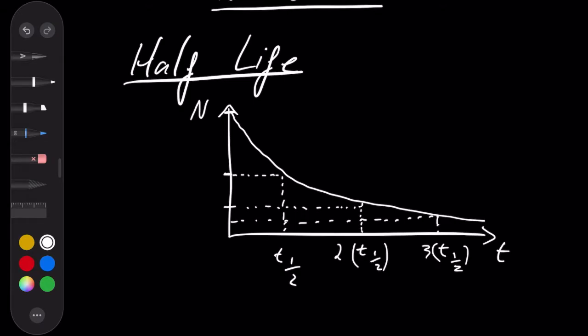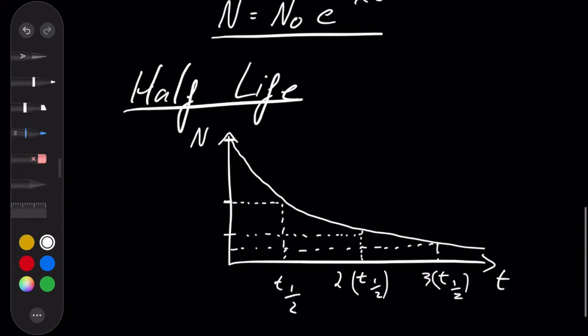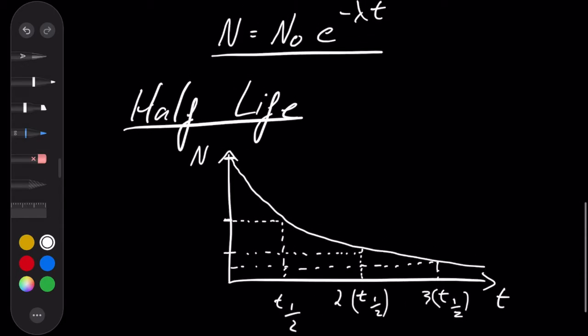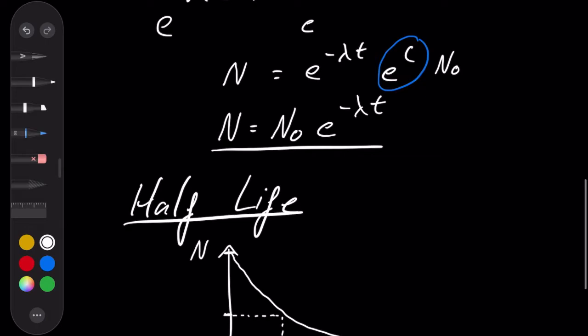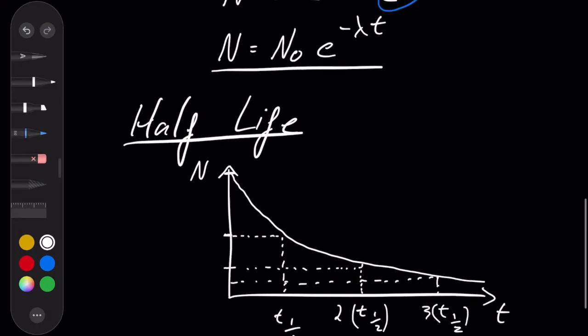And so I want to use this property to actually figure out a way of getting the half-life from this equation that we just derived. So let's do that.